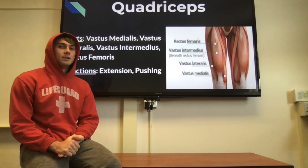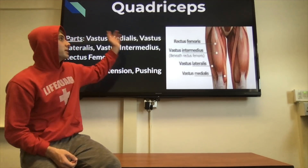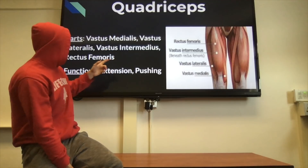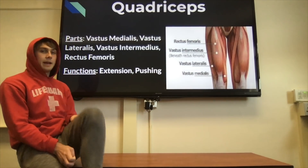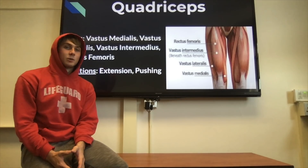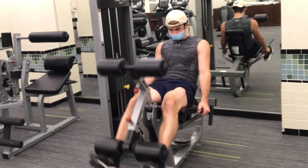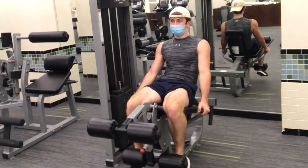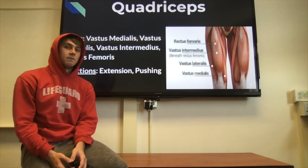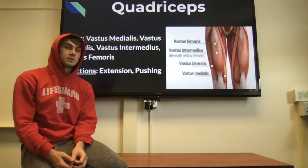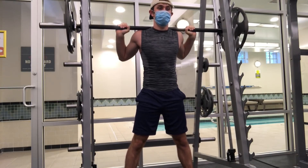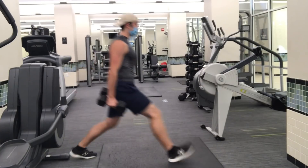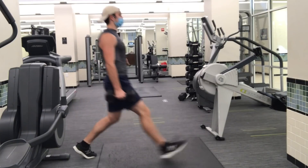The quadriceps have four parts — hence the prefix 'quad' — the vastus medialis, vastus lateralis, vastus intermedius, and rectus femoris. The quad is involved with extension and pushing of the leg. To isolate your quads, do leg extensions on the machine. But any compound movement involving leg extension also targets the quads, so squats, deadlifts, and lunges all involve the quadriceps.